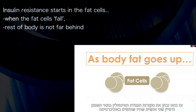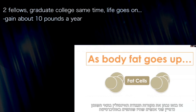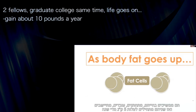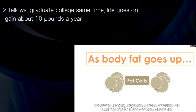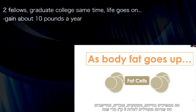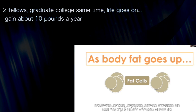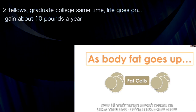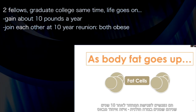Consider two individuals who were roommates at university. They go on, get married, get desk jobs, and life settles down. As life settles down, the waistline starts to expand, and they're both gaining 10 pounds of fat per year — until they join each other for their 10-year reunion and they're both morbidly obese.